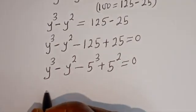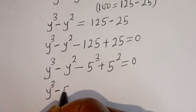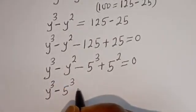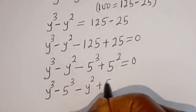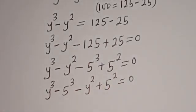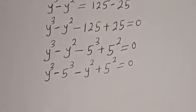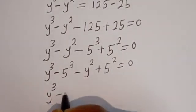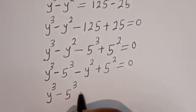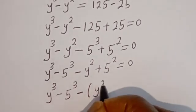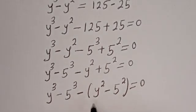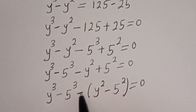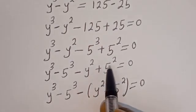Now let's pair this. We have Y to the power of three minus 5 to the power of three, then minus Y squared plus 5 squared, equal to 0. This can be written as Y to the power of three minus 5 to the power of three, minus bracket Y squared minus 5 squared, equal to 0. Opening the bracket gives minus Y squared and plus 5 squared back.